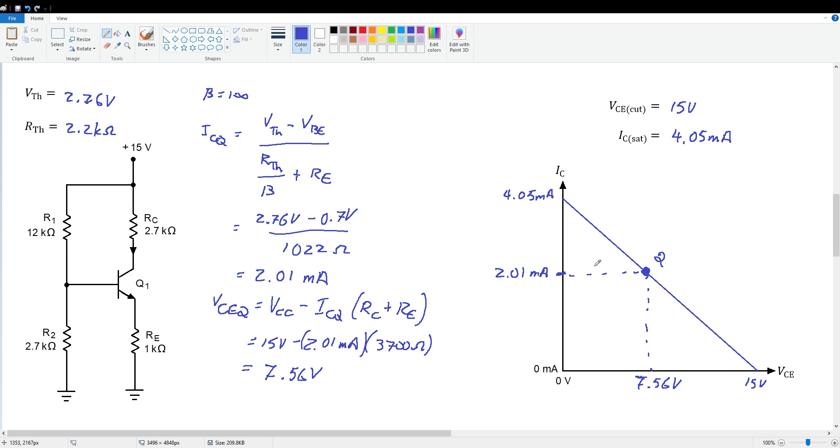That's probably a good place to be. Now, if we are desiring to keep the Q point right here about in the middle, what happens if we use transistors that have extreme betas, say 50 or 300? Is it going to screw up our Q point location? Let's take a look and see.